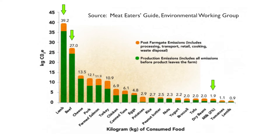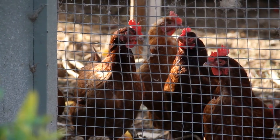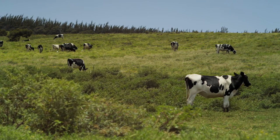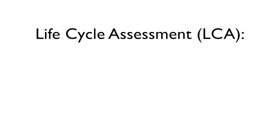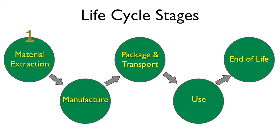Before attributing emissions to different sectors of animal agriculture, we'll look at the system used to measure and calculate these emissions. This quantification method is called an LCA — Life Cycle Assessment. It has been done for many years by many different groups using different methodologies. The LCA is an accounting method that tracks all greenhouse gas emissions produced by a given process, product, or system. Often called a cradle-to-grave analysis, it encompasses all emissions in the life cycle of the process being analyzed, including everything from the extraction of raw materials to the final disposal of the end product.